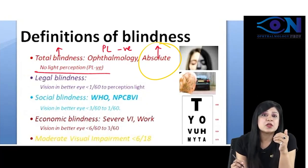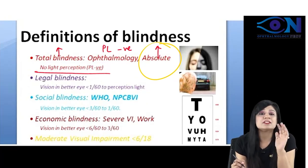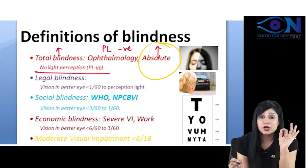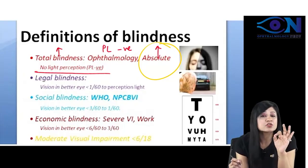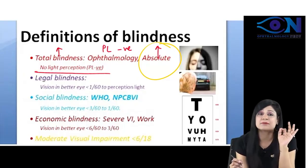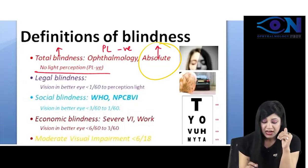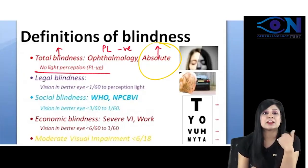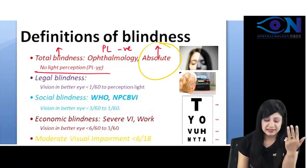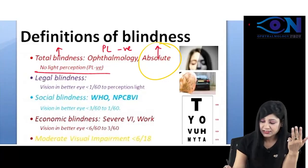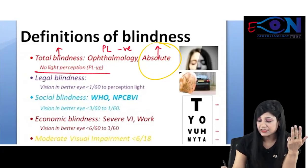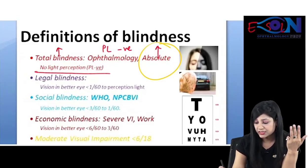Severe visual impairment means blindness. Now, starting from economic — it is Economic, Social, and Legal. So the mnemonic is ESL.